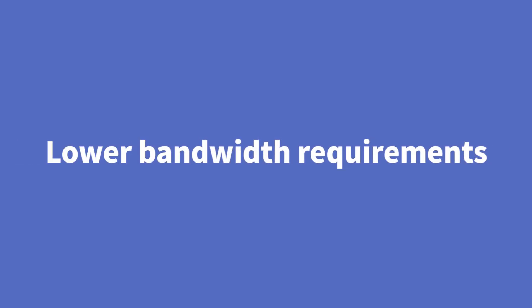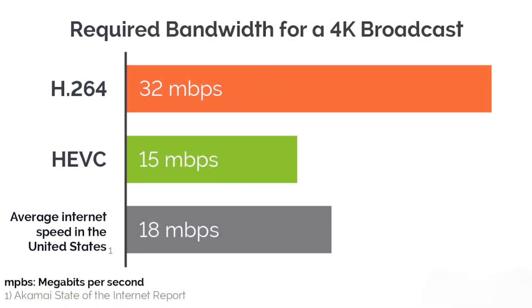Lower Bandwidth Requirements: H.265 requires less bandwidth than H.264 to transmit the same quality video, making it ideal for streaming video over the internet. Improved Video Quality: Because H.265 uses more advanced compression algorithms, it can provide better video quality than H.264 at the same bitrate. Reduced Storage Requirement: H.265's improved compression efficiency means video files take up less space on storage devices such as hard drives and memory cards.